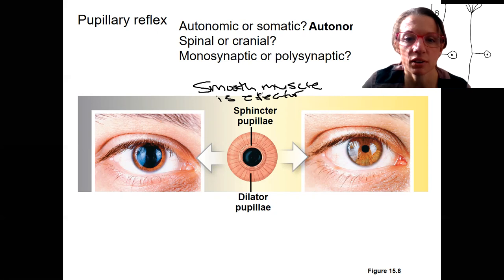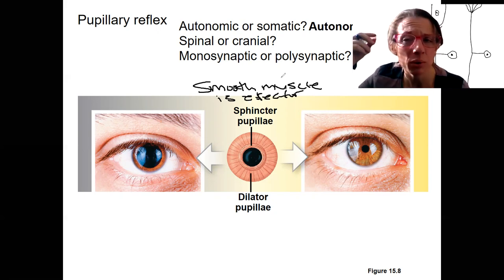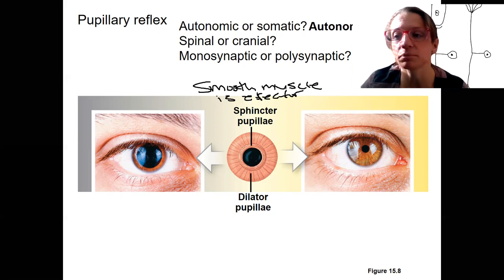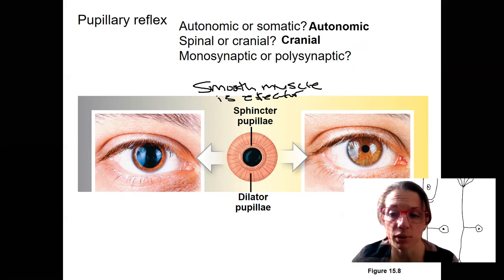Is this cranial or spinal? Well, this is happening up in the cranium. We don't have this travel down to the spinal cord to create this reflex. This is a cranial reflex. The other reflexes we've seen, like the knee-jerk reflex, for example, that happens in the spinal cord. That would be a spinal reflex.